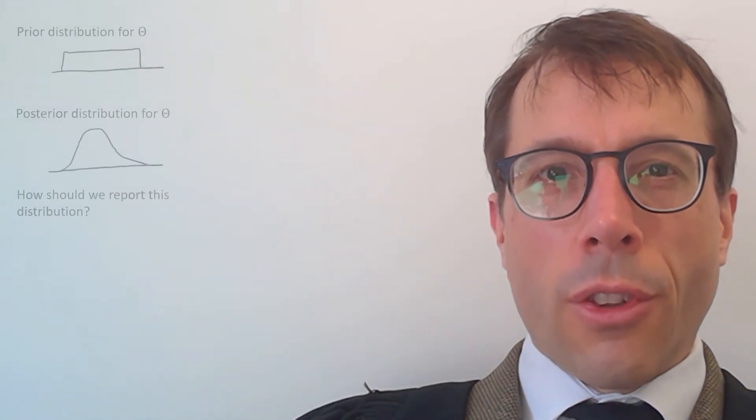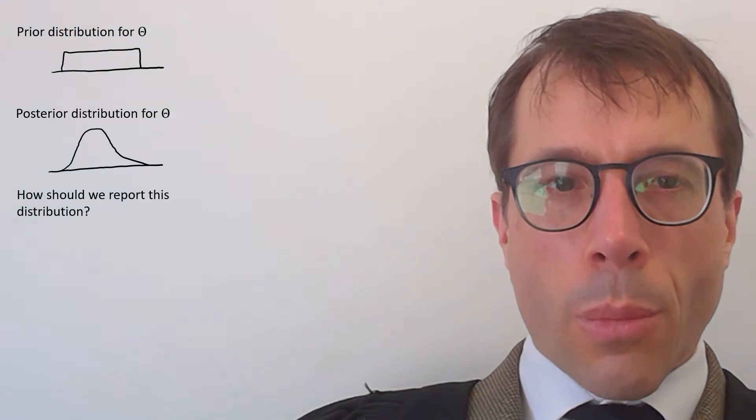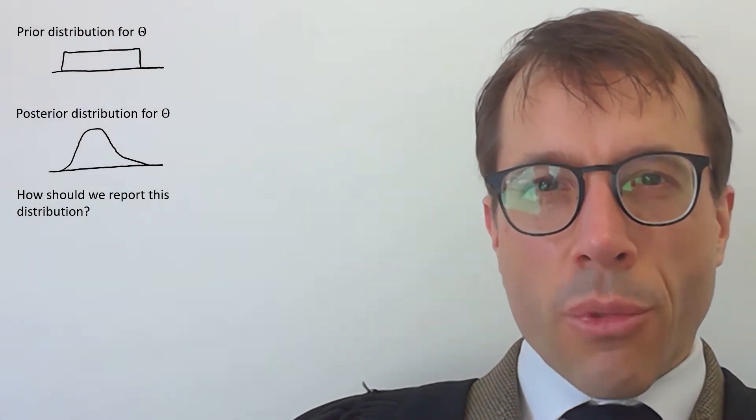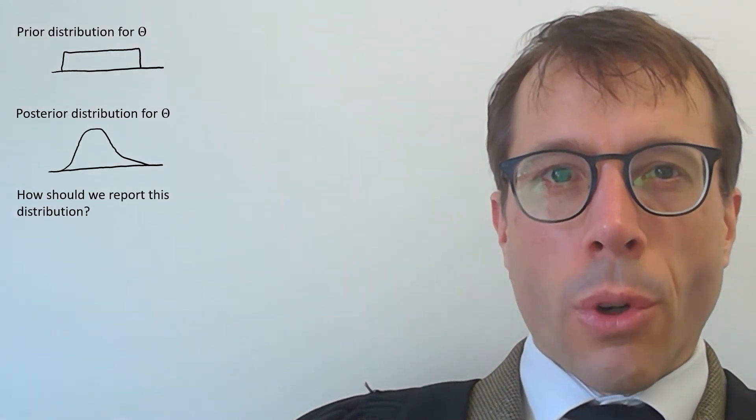Let's imagine we've done a Bayesian analysis of some problem. We started off with a prior distribution for the unknown parameter, called it theta, then we observed data, and we came up with a posterior distribution. So how shall we report it?